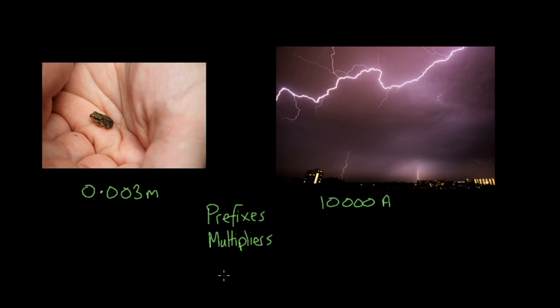So, for example, we can have the prefix milli and you're familiar with the measurement of a millimetre. A milli is actually multiplying by a thousandth. So, we could write that as times 10 to the power of minus 3. And so, we could rewrite the width of this tree frog as 3 millimetres.